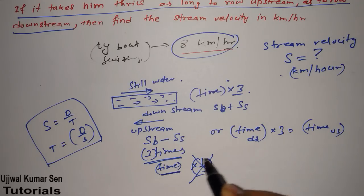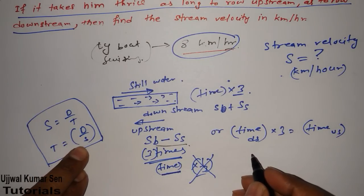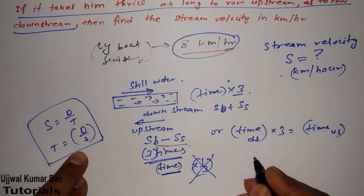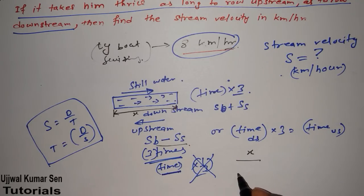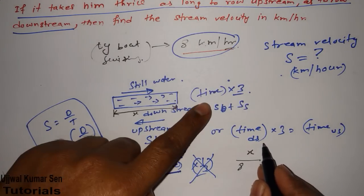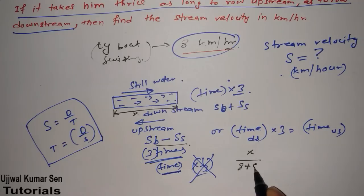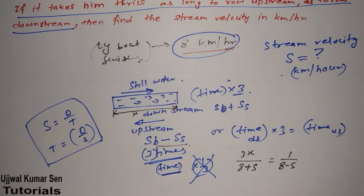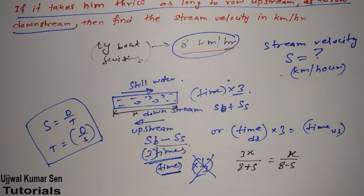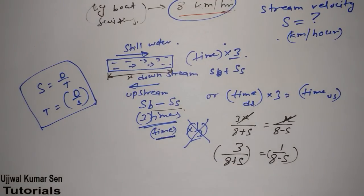So, time taken by downstream, when speed of the boat is like this, if downstream, time is equal to distance by speed. Distance by speed. So, let's say distance is x. So, x by speed is what, 8, it's downstream, 8 plus s. It is because of downstream. Is it multiplied by 3? And, here, x by 8 minus s. But, again, this here would be x because distance by speed. So, x get cancelled. What will be remaining here? 3 by 8 plus s is equal to 1 by 8 minus s.